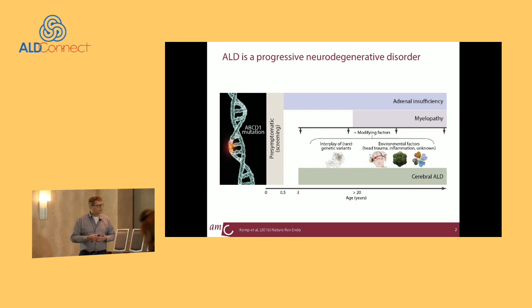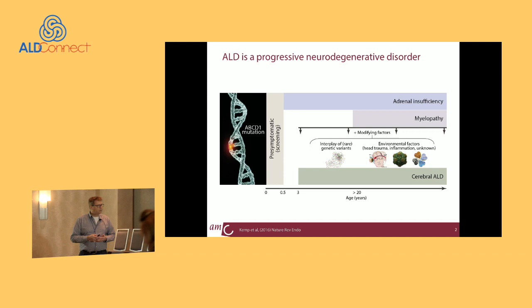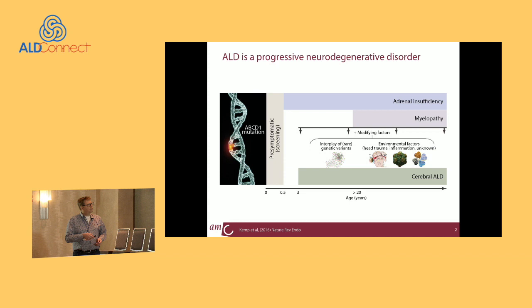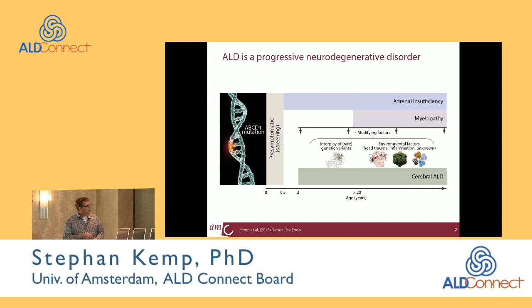Just a brief introduction about ALD — you've heard about this from Florian earlier — but it's essential to recognize that ALD is actually three different main categories. In general, male patients have a high risk of developing adrenal insufficiency. They are at risk to develop myelopathy — together these two are named adrenal myelopathy or AMN — and patients are at high risk to develop cerebral ALD.